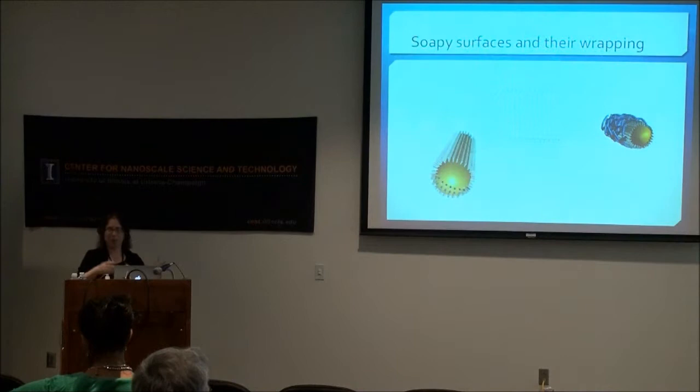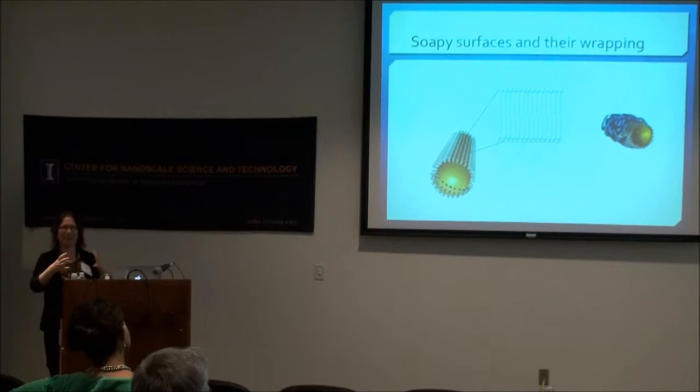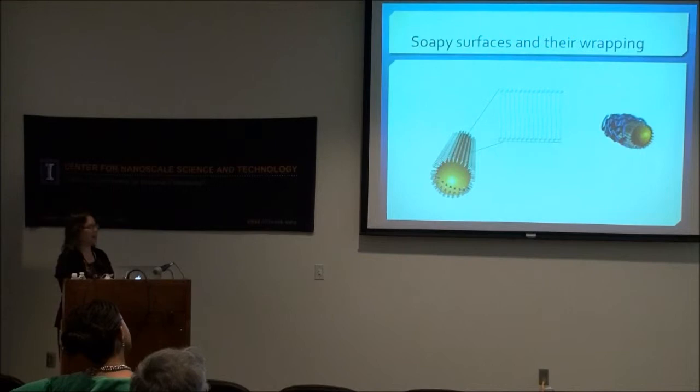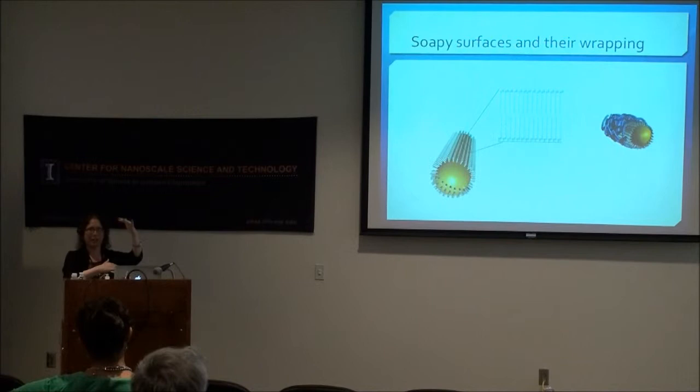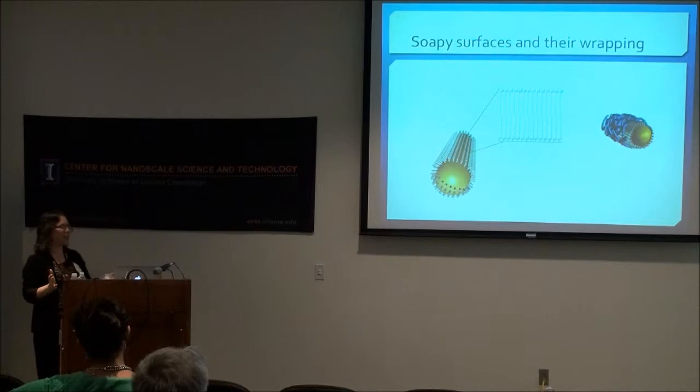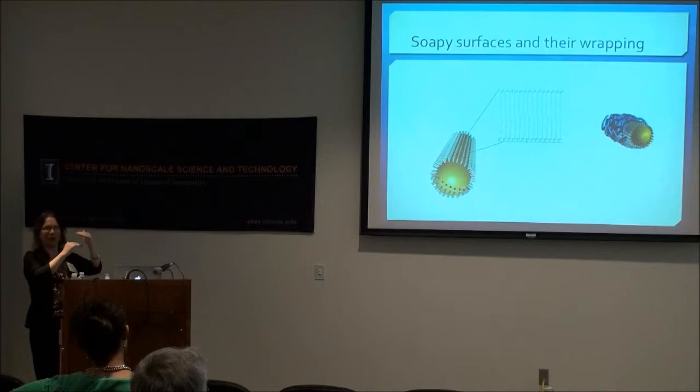I'm going to skip the synthesis details — though we've spent 10 years understanding the chemistry, crystal growth, and electron diffraction — and just say that by the end of synthesis, all our nanoscale objects have a bilayer of surfactant on the particle surface used to control shape. It has a quaternary ammonium head group and a 16-carbon tail. Measuring the zeta potential gives a highly positively charged object, with a hydrophobic region very close to the metal. This gives lots of opportunities for molecules to interact with the surface.